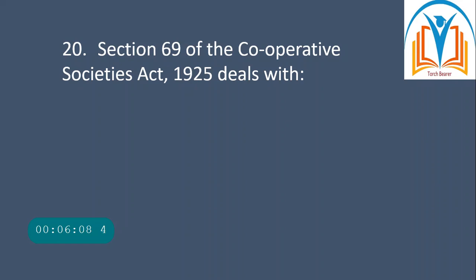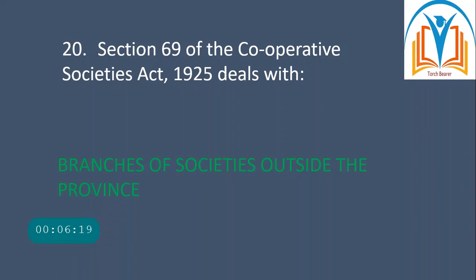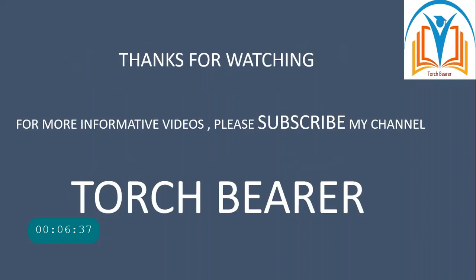Section 69 of the Cooperative Societies Act 1925 deals with branches of societies outside the province — those societies operating in two provinces are dealt with under Section 69. That was all for today. Thanks for watching. For more informative videos, please subscribe to my channel Torchbearer.